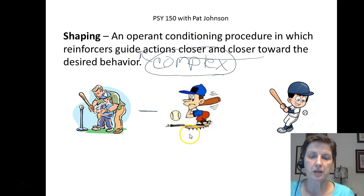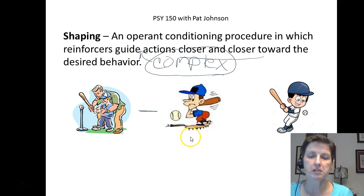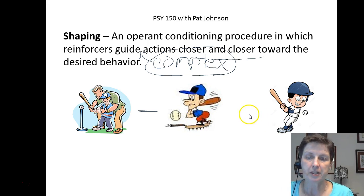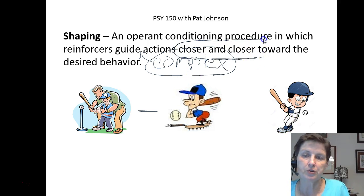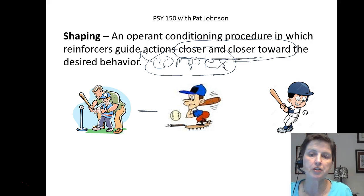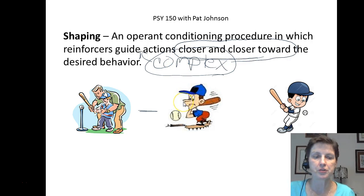Then maybe there's an intermittent step where the kid is hitting the t-ball on their own. Then we try a slow-pitched softball where it's underhanded and the ball is going fairly slowly and the kid practices that way. And then we move finally to baseball where it's a faster pitch overhand, and then maybe faster and faster. What we're doing is those baby steps — reinforcing those intermittent steps closer and closer towards the target behavior.